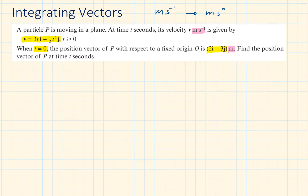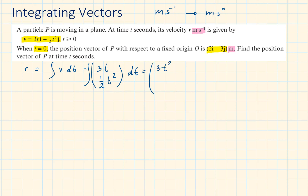So let's do that. I'm going to use R for displacement — it's a common letter to use — and that is the integral of V with respect to t. We could integrate it in the format given, or I'm going to simplify it and integrate as a column vector. The result will be 3t squared divided by the new power, and then half t to the power of 3 divided by the new power, plus constants. However, these constants could be different numbers, so I'm going to label them as c1 and c2.